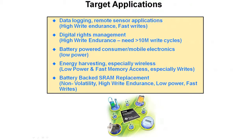FRAM devices fit target applications such as data logging or remote sensor applications requiring high write endurance and fast writes. Digital rights management requiring high write endurance — greater than 10 million write cycles. Battery-powered consumer and mobile electronics with low power requirements. Energy harvesting, especially wireless, needing low power and fast memory access. And battery-backed SRAM replacement, offering non-volatility, high write endurance, low power, and fast writes.